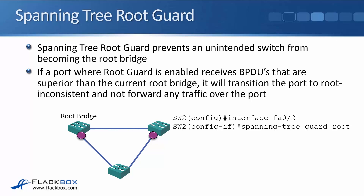Another reason the wrong switch could become root bridge is an attack — an attacker places a switch on the network trying to make it the root bridge, forcing traffic through the switch they control so they can sniff traffic and gain access to sensitive information. If you want to ensure the current root bridge remains the root bridge, you can use Root Guard. If a port with Root Guard enabled receives BPDUs that are superior to the current root bridge, it will transition that port to 'root inconsistent', meaning no traffic will be forwarded over that port.